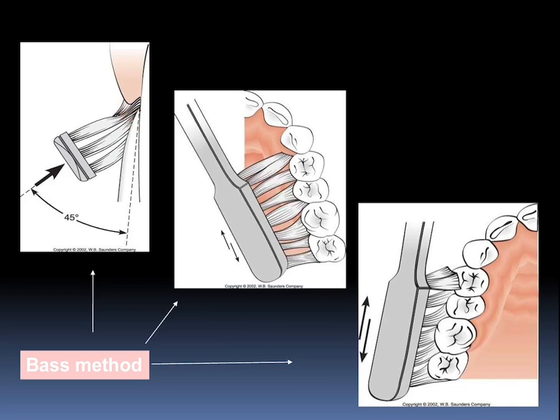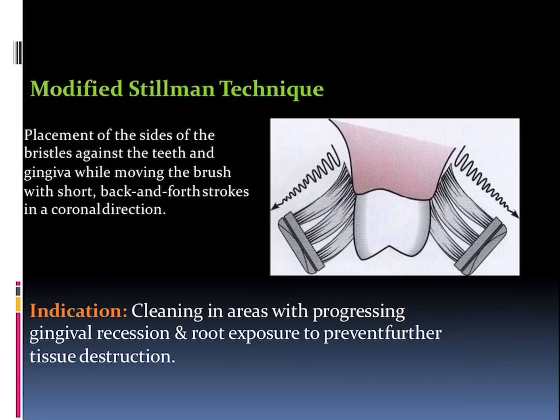Talking about the modified Stillman technique: it is the placement of the sides of the bristles against the teeth and gingiva by moving the brush with soft back-and-forth strokes in a coronal direction — opposite to Bass. The indication of this is for cleaning in areas with progressive gingival recession and root exposure to prevent further tissue destruction. Remember for an MCQ: in case of recession we go for the modified Stillman technique; in case of periodontal surgery patients who have already undergone surgery, we go for the Charters technique.